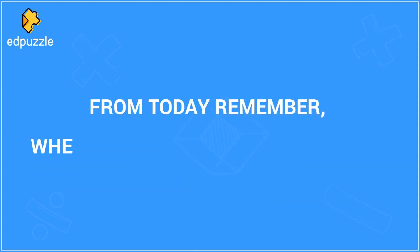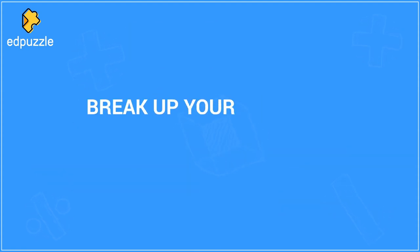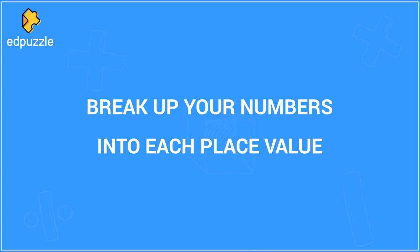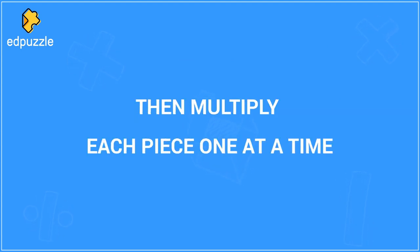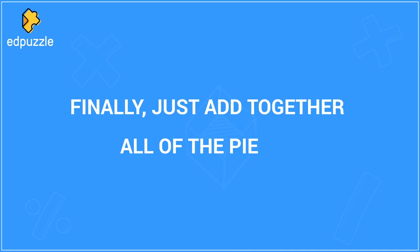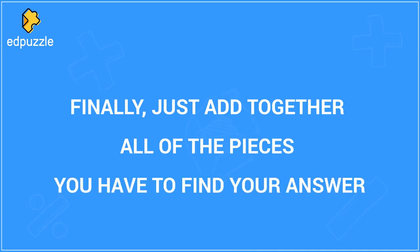From today, remember, when you're using an area model, break up your numbers into each place value. Then multiply each piece one at a time. Finally, just add together all the pieces you have to find your answer.